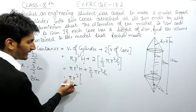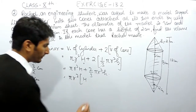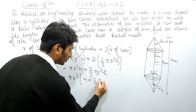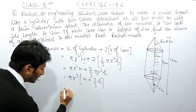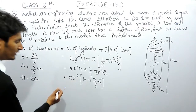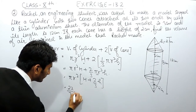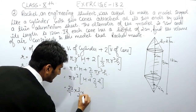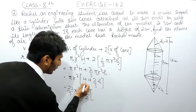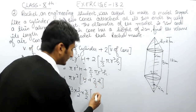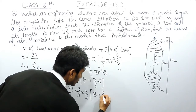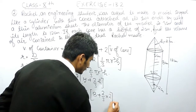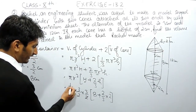Taking π r² common, the expression becomes π r² × (h + 2/3 × h). Now substituting values: π = 22/7, r = 3/2, so r² = 3/2 × 3/2 = 9/4. The height of the cylinder h = 8, and the height of the cone = 2, giving (8 + 2/3 × 2). The 22 and 2 can be cancelled — 11 times — giving 11 × 9 / (7 × 2) × (8 + 4/3).